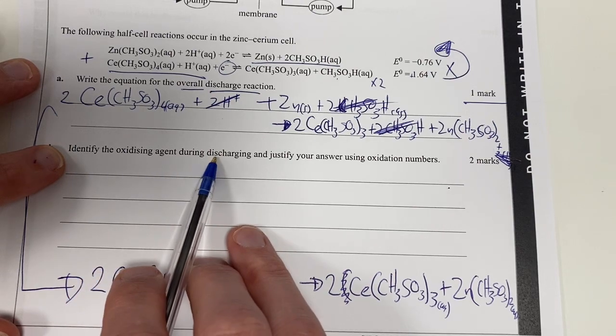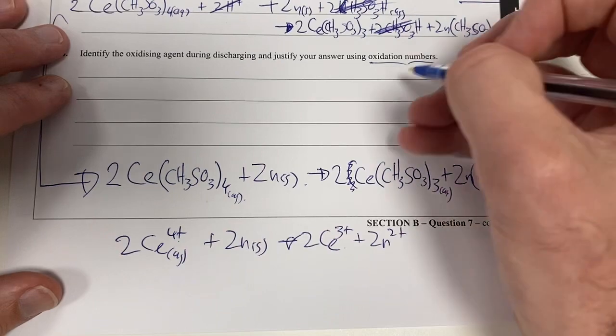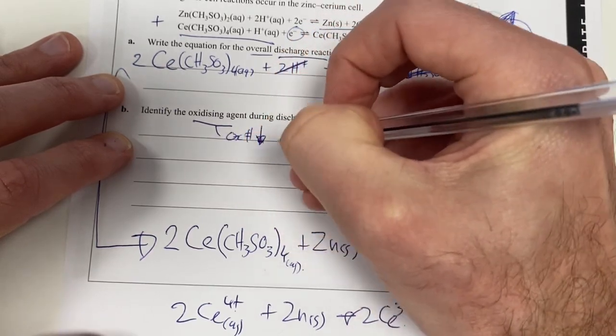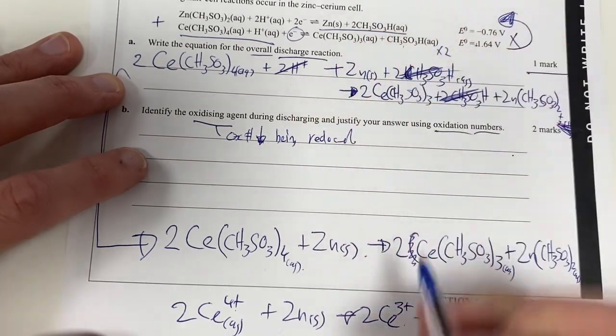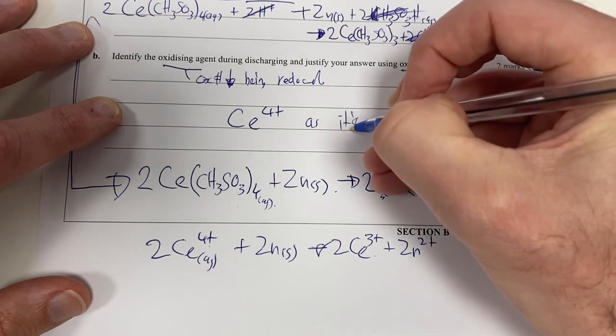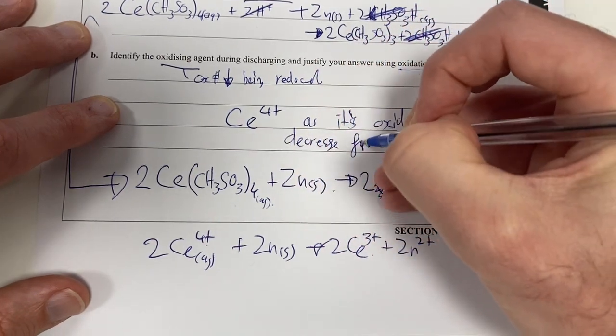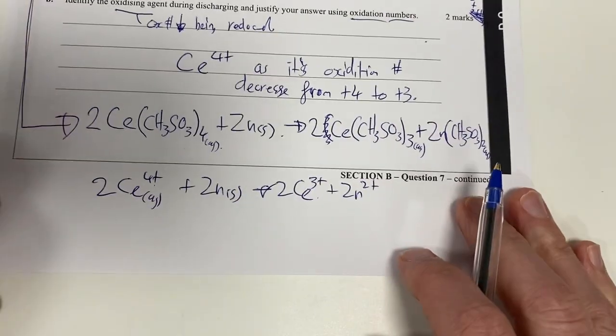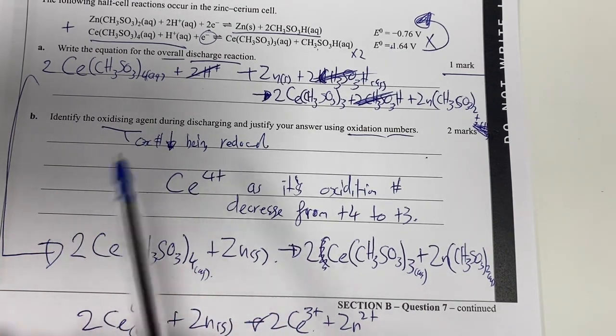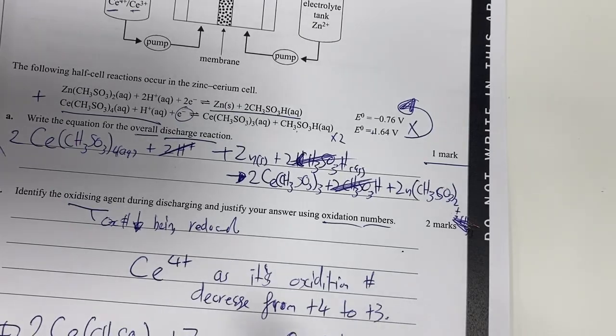Identify the oxidizing agent during the discharging and justify your answer using oxidation numbers. I've got discharge which is my reaction. Now the oxidizing agent causes oxidation and is reduced itself. So therefore the oxidation number should be going down because it is being reduced. So therefore it must be my CE4+ as its oxidation number decreases from positive 4 to positive 3. I can just choose the fact that this is my oxidizing agent because it's being reduced. Remember, oxidizing agent itself is reduced, its oxidation number goes down.